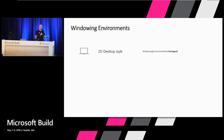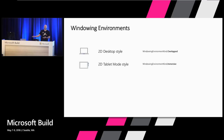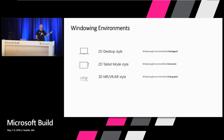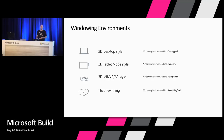Now let's look at that windowing environment, because this is how we anticipate the future and make it reasonable for you to add support for new devices. We had our 2D desktop style, which is the overlap one. We have our 2D tablet style, which is our immersive one. And we have our 3D one, which is the holographic. And that thing that someone is working on in a basement somewhere or a secret lab — this is where that one would show up as a new windowing environment type, with all the characteristics for that.